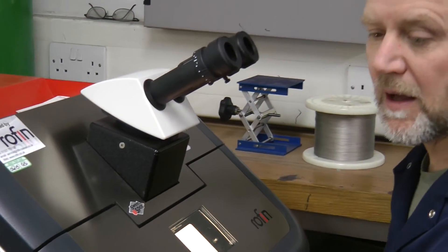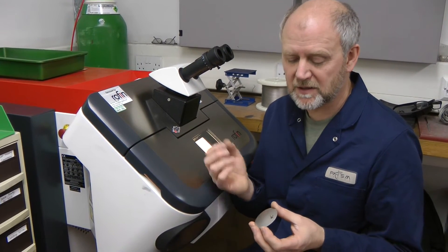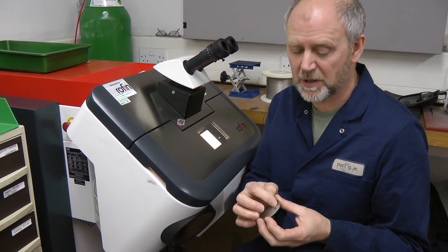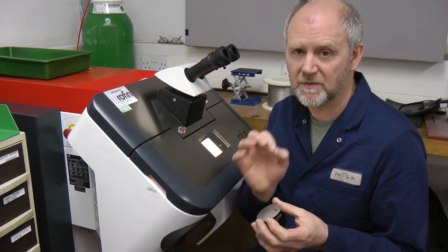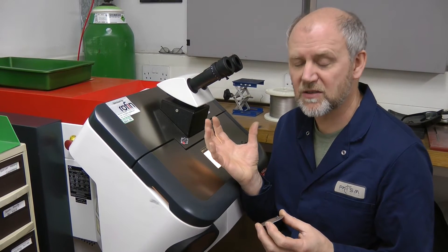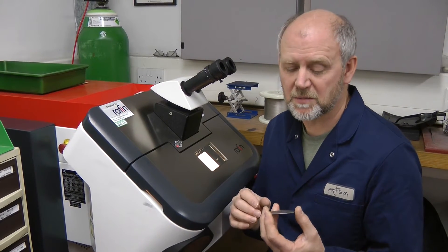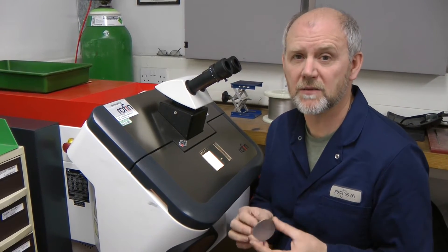There we are. Fairly quick process. The welder sends a pulse to the surface and melts a very specific section of the surface under a gas shielded atmosphere, which is perfect for titanium, so you get a very strong weld. So that's now ready for colouring.